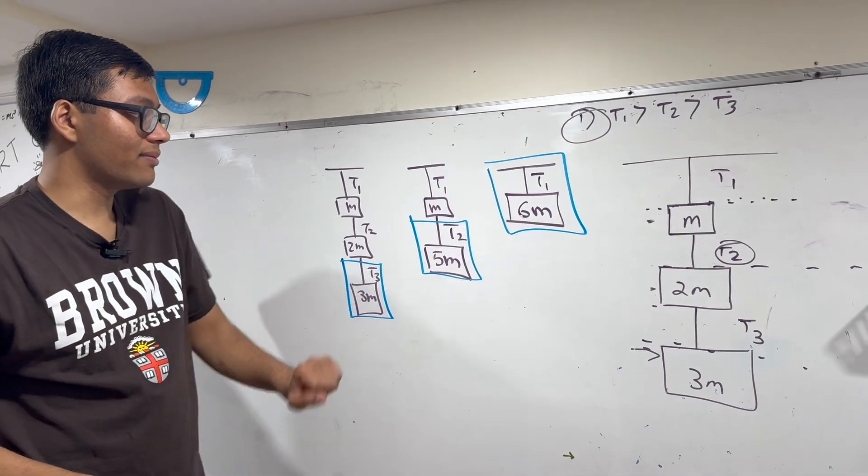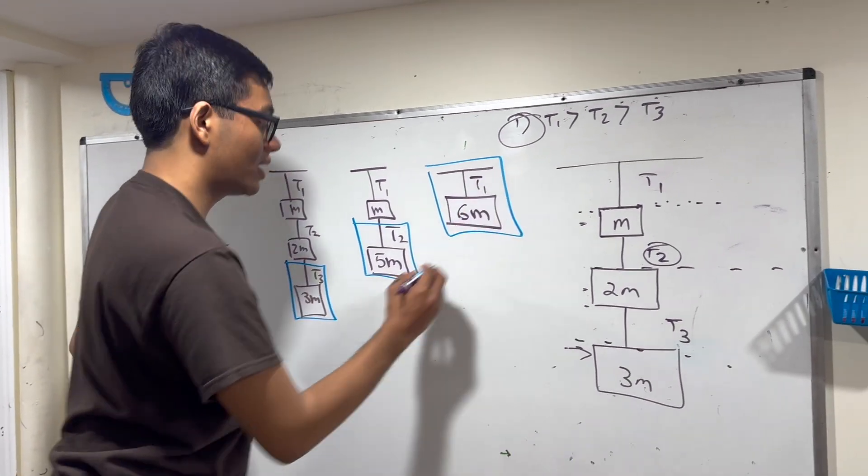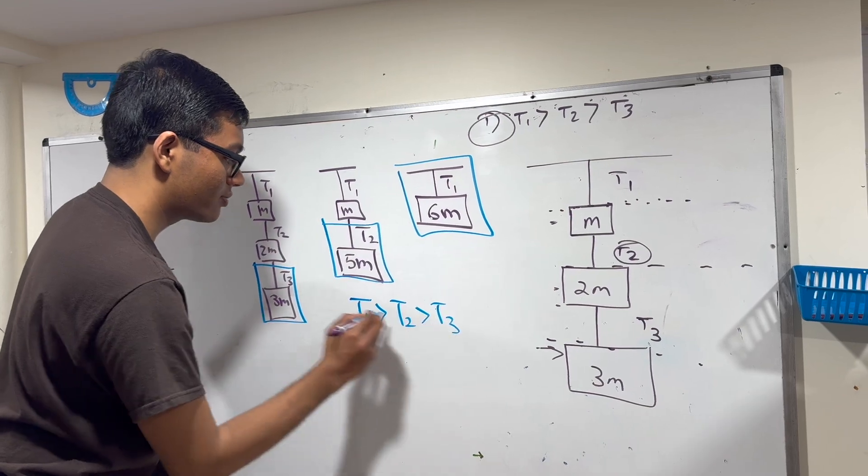So if you look at it, T1 has to handle the most amount of weight, 6m. T2 has to handle 5m. T3 has to handle only 3m. That's why the tension in the first rope has to be bigger than the tension in the second rope has to be bigger than the tension in the third rope.